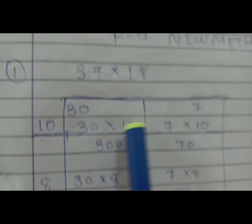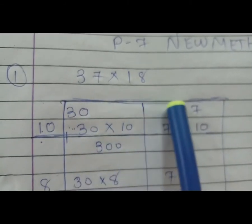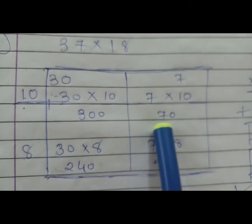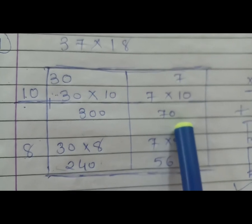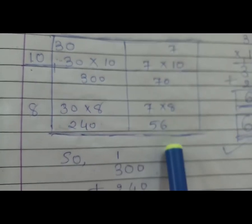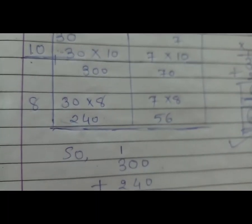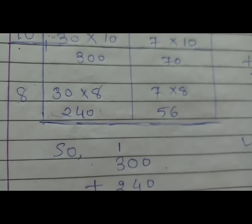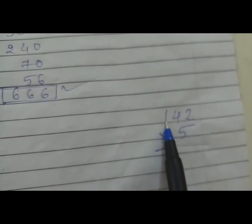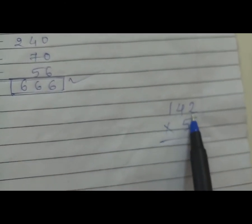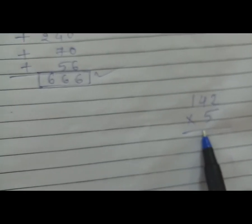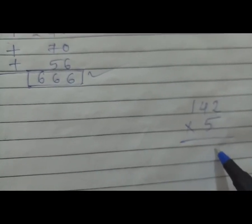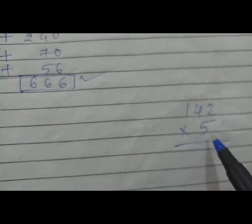वो मैं आपको फिर से दिखा रही हूं. समझ में आ रहा है ना? इस तरह से आप यह सम कर सकते हो. यह जो सम है 142 multiply by 5 — यह सम मैं समझा रही हूं पुरानी method से. यहाँ पर तो एक ही digit है, इसलिए कर पाओगे.